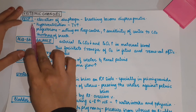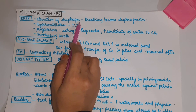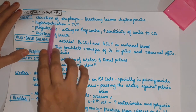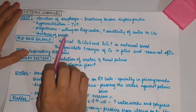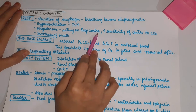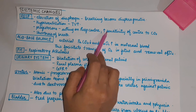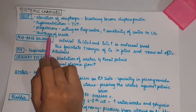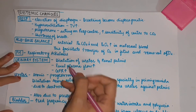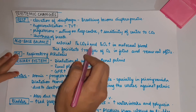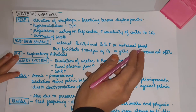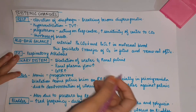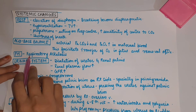Systemic changes — Respiration: there is elevation of the diaphragm, breathing becomes diaphragmatic, there is hyperventilation, and tidal volume is increased. Progesterone acts on the respiratory center, increasing its sensitivity to carbon dioxide, which leads to shortness of breath. Acid-base balance: arterial partial pressure of CO2 is decreased and partial pressure of O2 is increased in maternal blood, allowing easy transfer of oxygen to the fetus and easy removal of carbon dioxide from fetal blood. Pregnancy is a state of respiratory alkalosis.